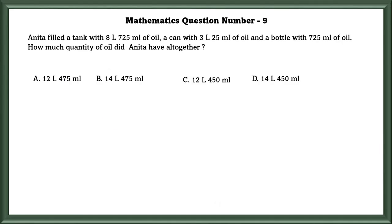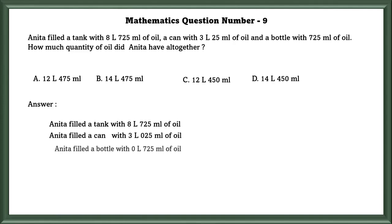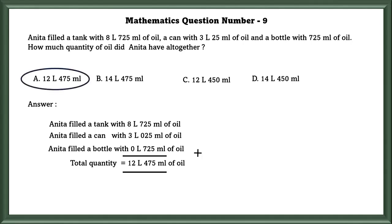Mathematics Question Number 9: Anita filled a tank with 8 liters 75 ml of oil, a can with 3 liters 25 ml of oil, a bottle with 725 ml of oil. How much quantity of oil did Anita have altogether? If we add all these values, we will get 12 liters 475 ml of oil. That is A.